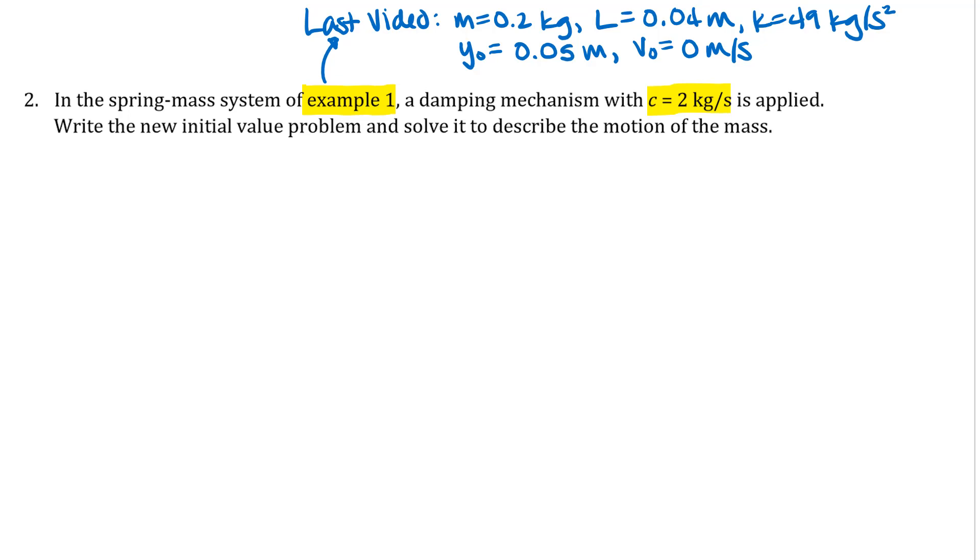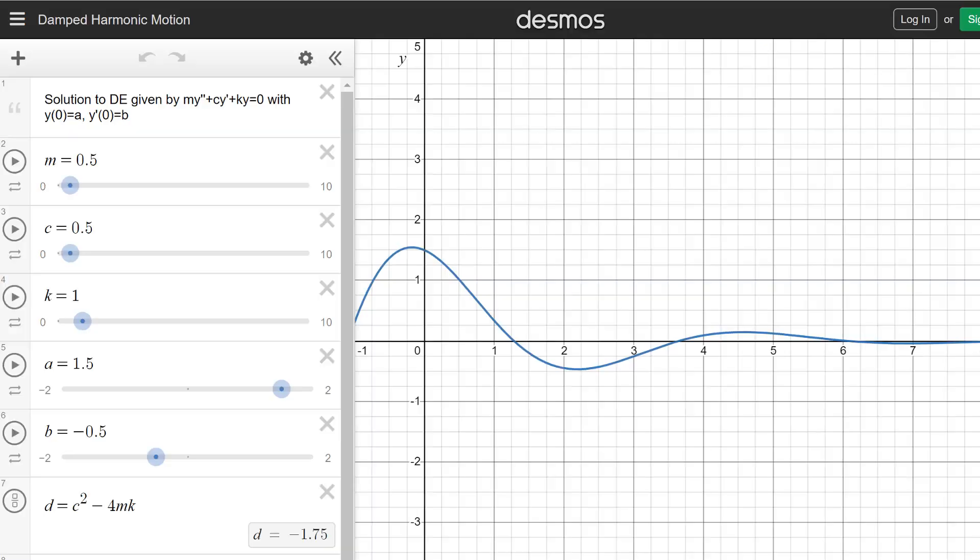So we're going to look, actually before we solve this, at an app I have and I will put the link in the video description for this. This is just a Desmos app and you can use the sliders or type your own numbers in for the m, c, and k values.